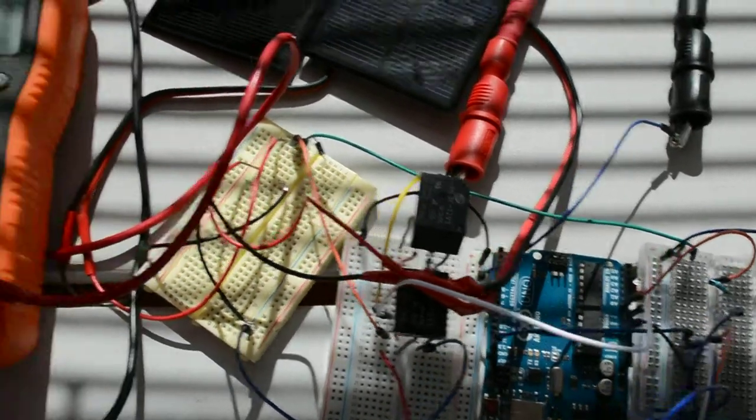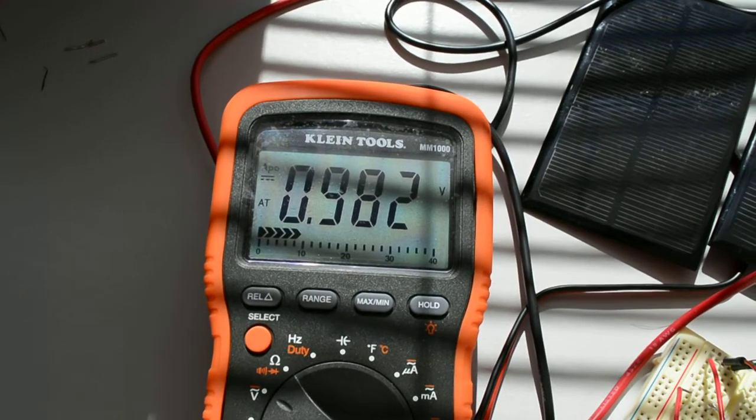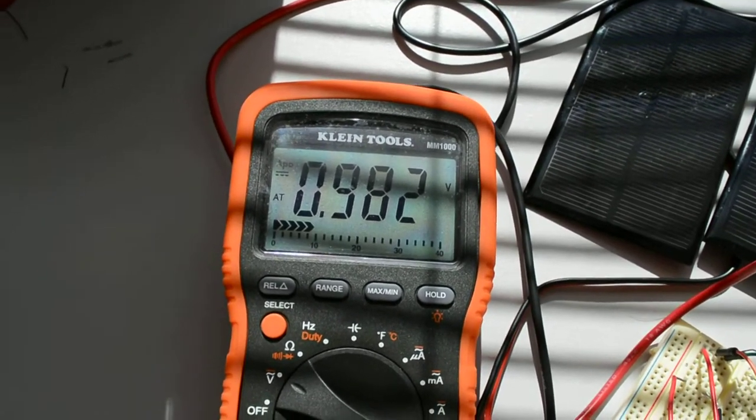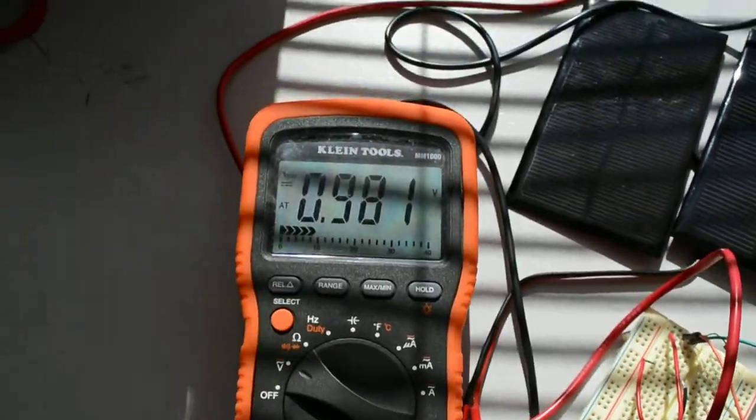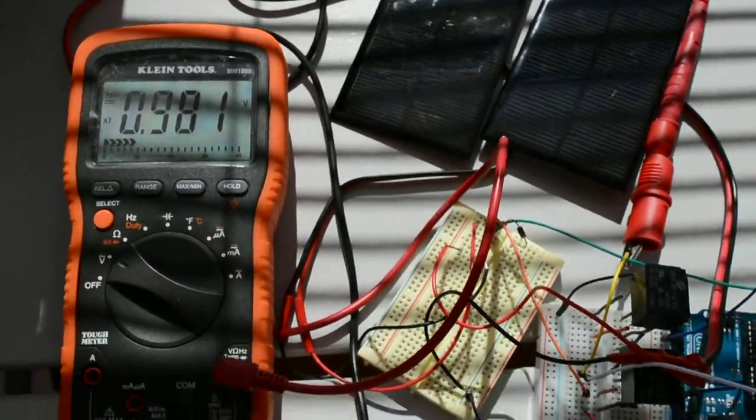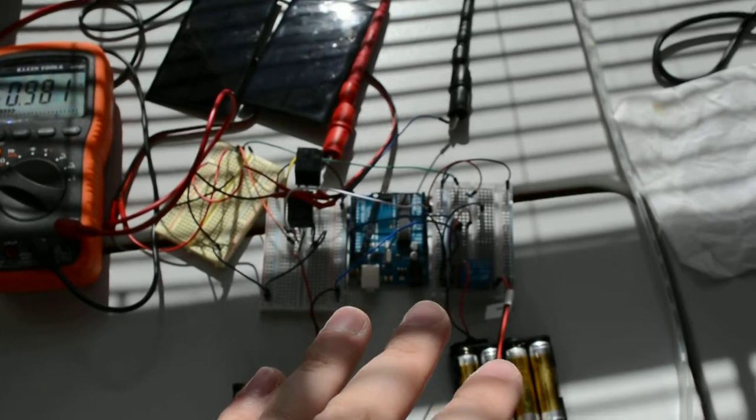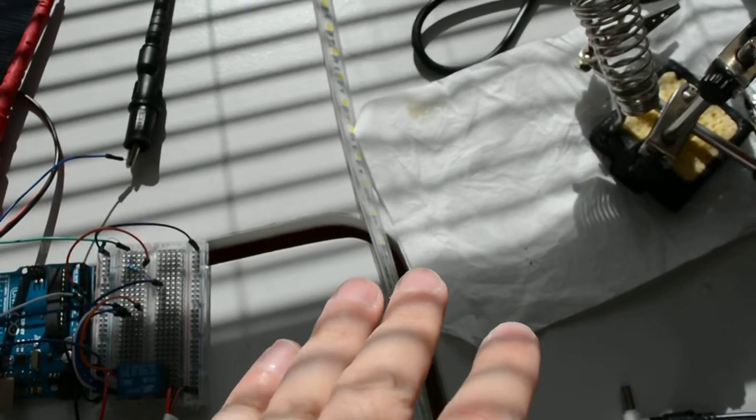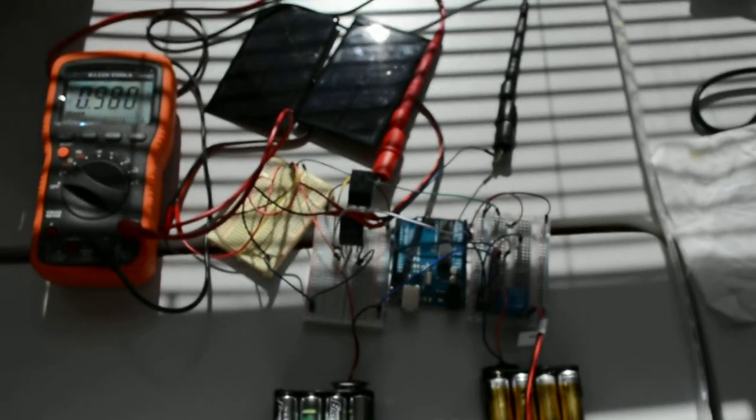You can see the voltage is 0.98 volts, essentially less than one volt. It's not turning on the Arduino, so I can consider this voltage is off from the battery. Daytime: Arduino turned off and the LED is not on. That's the scenario.